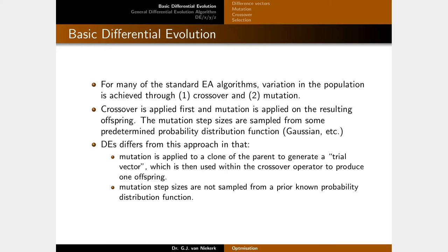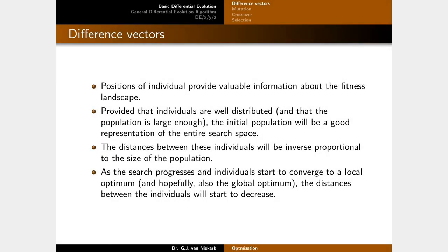DE differs from this approach in that, firstly, mutation is applied to a clone of the parent to generate what's known as a trial vector, and then this is used within the crossover operator to produce a single offspring. Lastly, mutation step sizes are not sampled from any known probability distribution — they are determined dynamically within the algorithm itself, which is a very powerful property of DE.